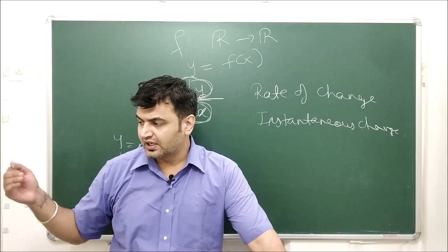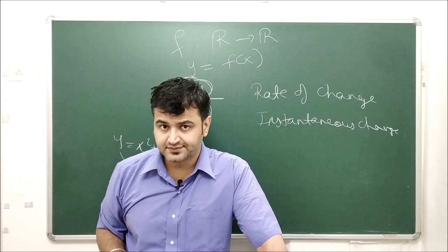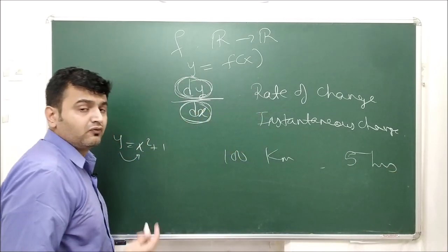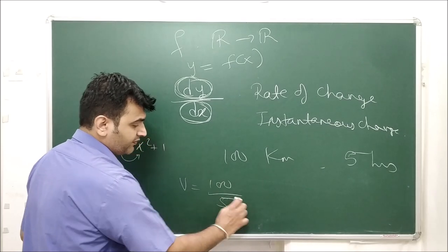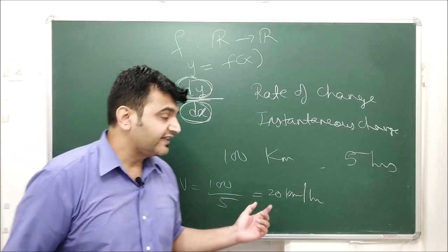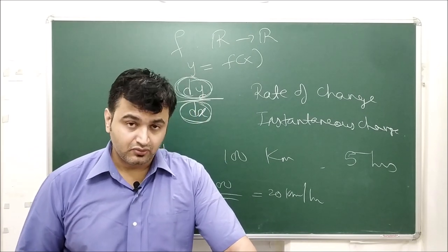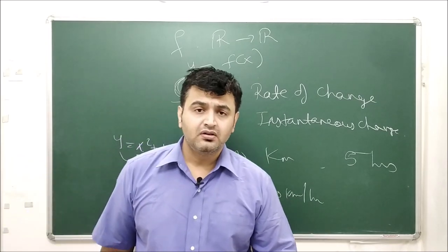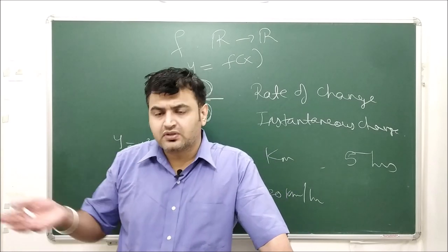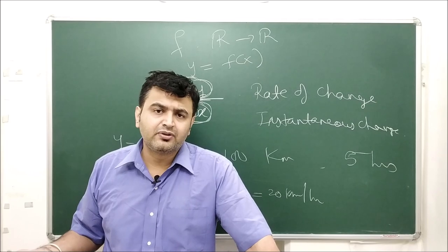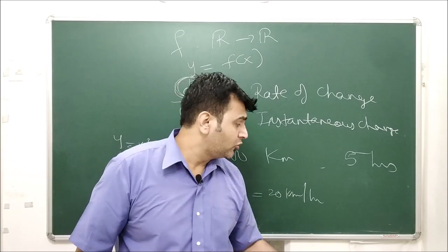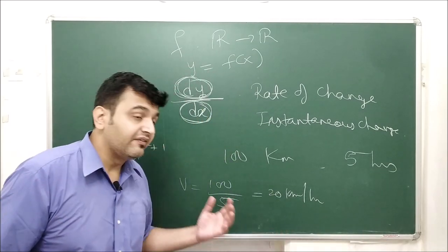For example, suppose a car has traveled 100 kilometers in 5 hours. The average velocity is distance/time = 100/5 = 20 km/h. But this is only the average velocity. In reality, the driver may have gone 10 km/h in the city and 30–35 km/h on the highway, so the speed was not exactly 20 km/h throughout. This 20 km/h is the average, not the instantaneous velocity.